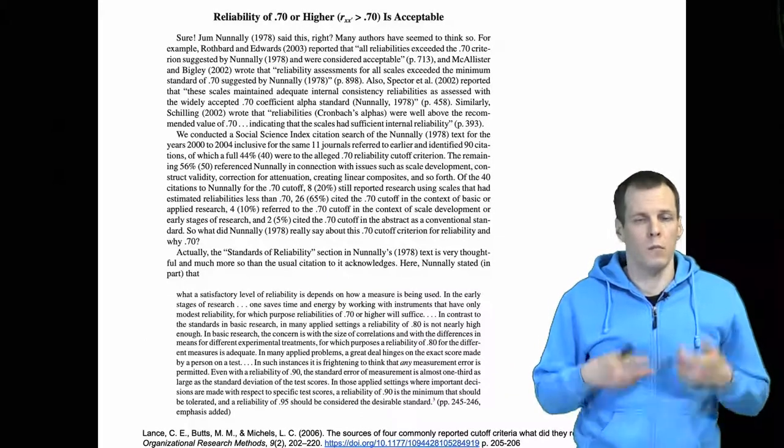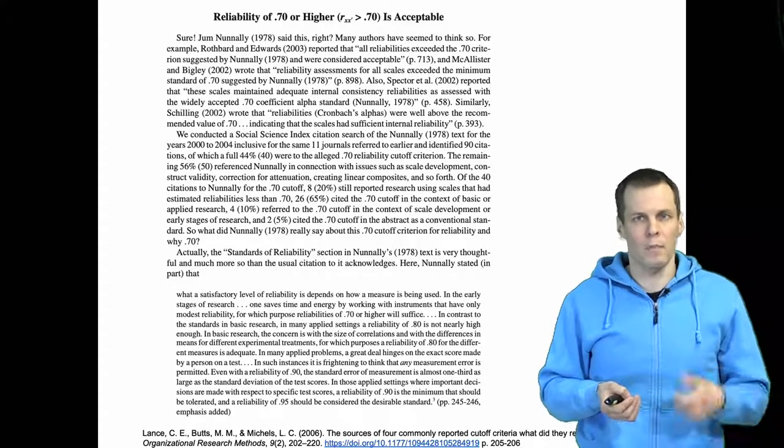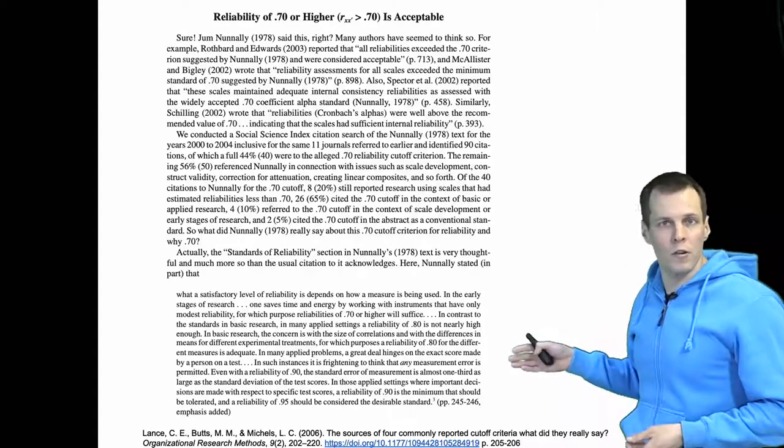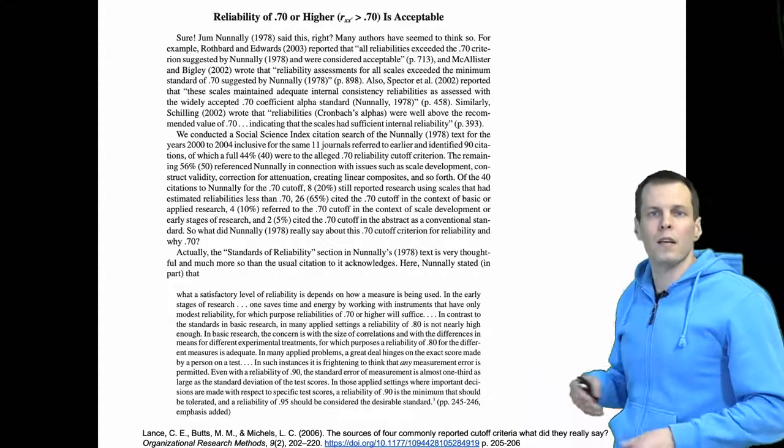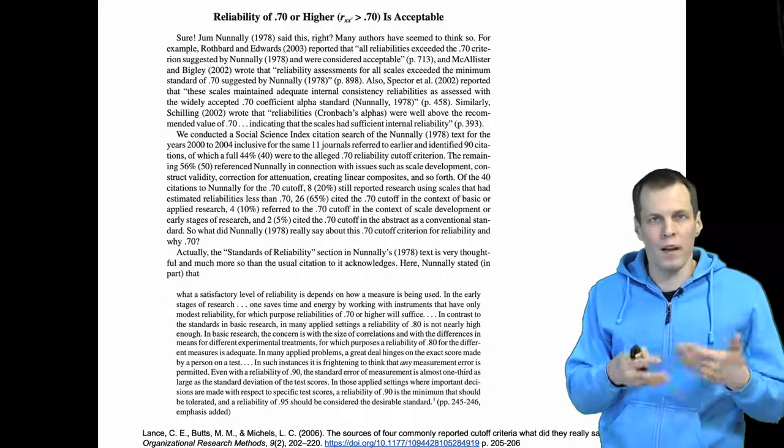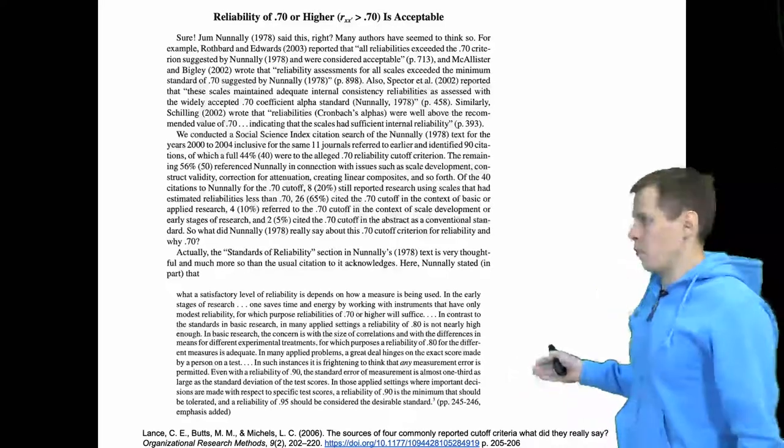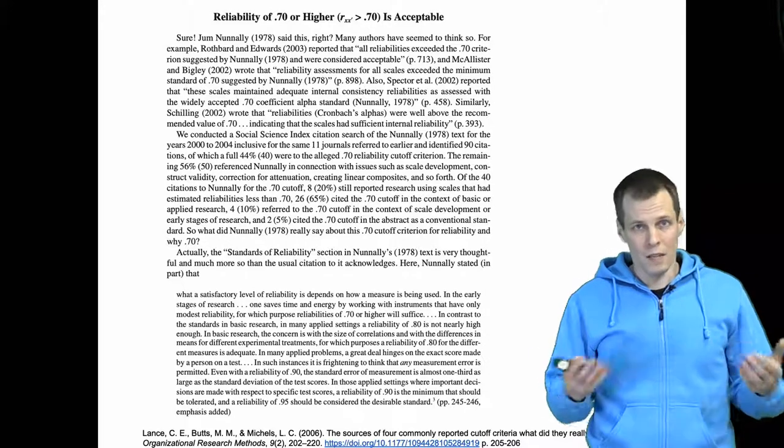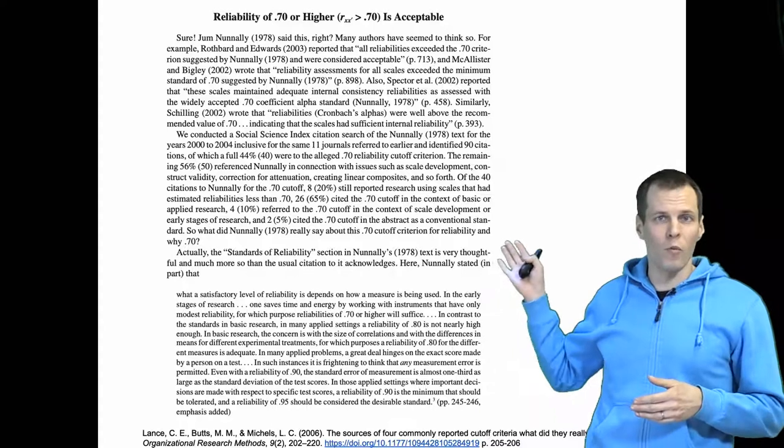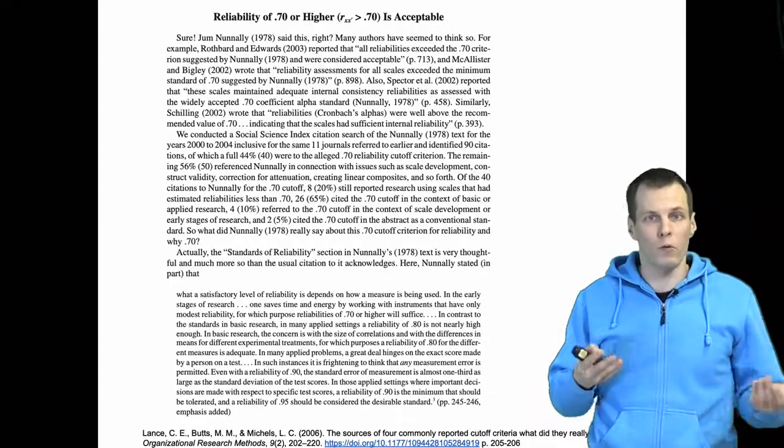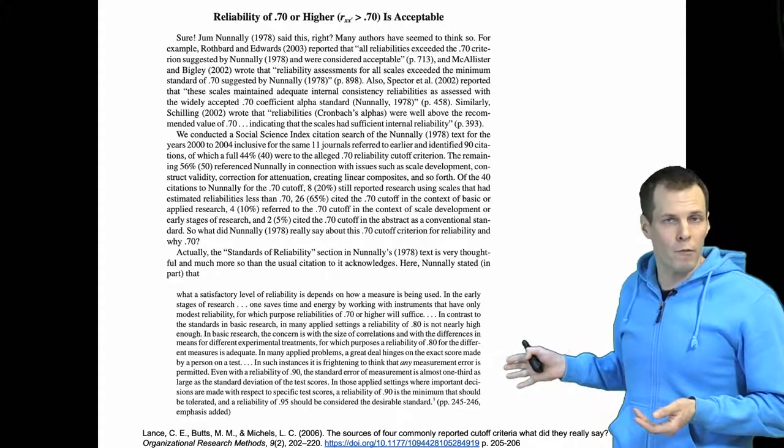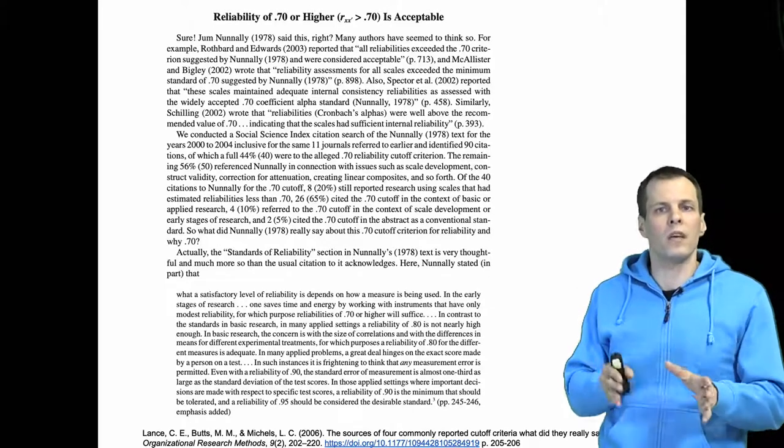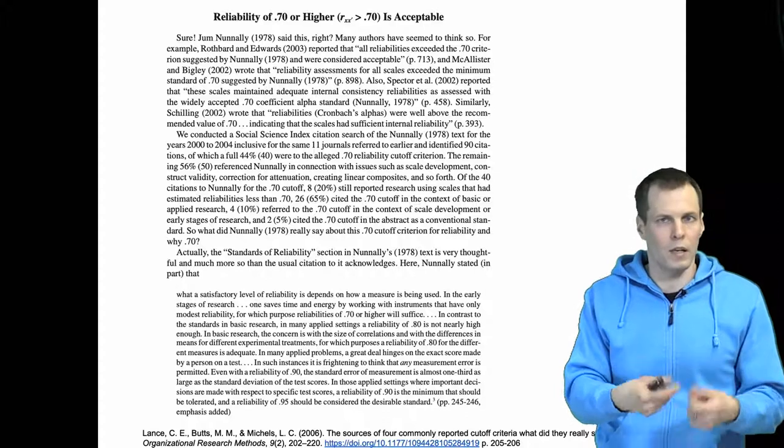What does Nunnally say? Well, Nunnally does not specifically say that 0.7 is always acceptable. Instead, he recommends that for very early research, 0.7 may be okay. If you have a more refined or developed theory that you're testing, then 0.90 may be required. Typically, when authors try to submit papers to journals, they just pick the lowest number out of convenience. Many probably have not read this segment of the book or seen it—they cite it out of habit. So Nunnally does not really say that 0.7 is always okay; it depends on the context.